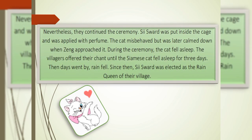Nevertheless, they continued the ceremony. Sea Sword was put inside a cage and was supplied with perfume. The cat misbehaved but was later calmed down when Zhang approached it. During the ceremony, the cat fell asleep. The villagers offered their chant until the Siamese cat fell asleep for three days. Then, days went by. Rain fell. Since then, Sea Sword was elected as the rain queen of their village.